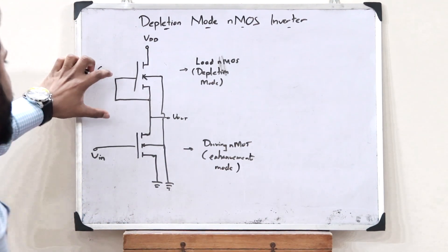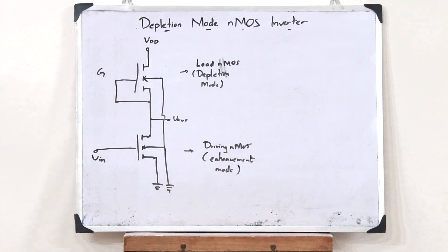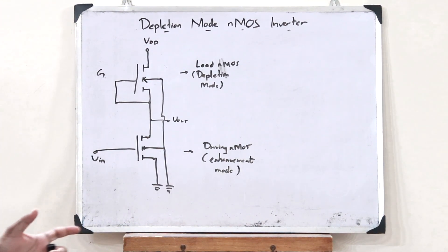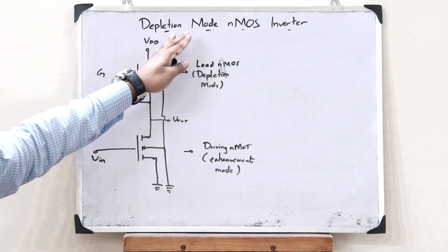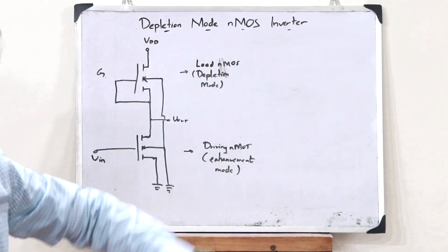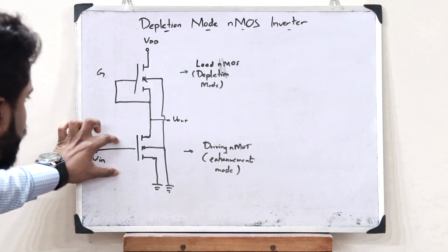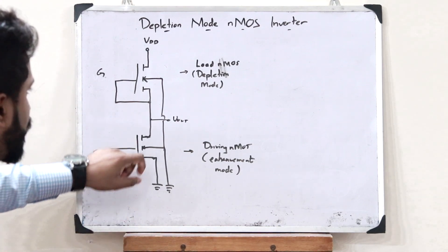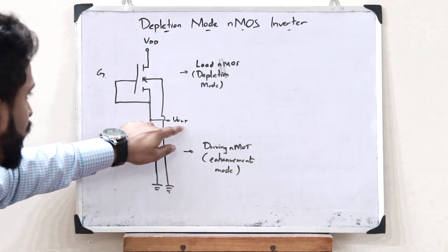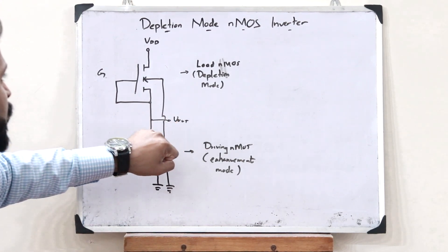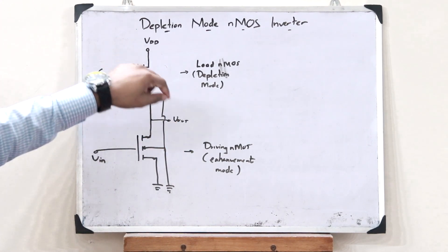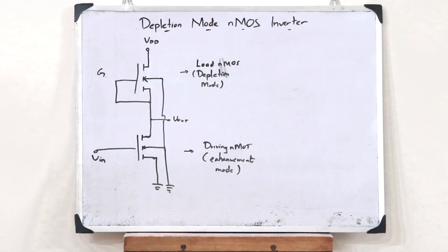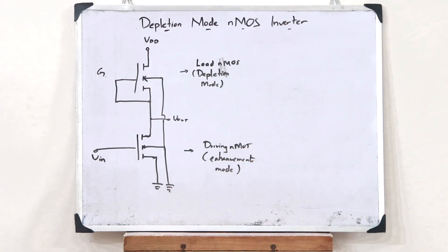With the help of two NMOS transistors, we have now constructed a particular depletion mode NMOS inverter. This is where we give an input, and this is where we obtain an output. And this is where we give the source voltage.